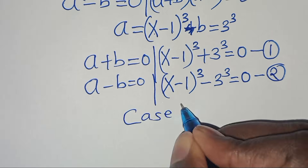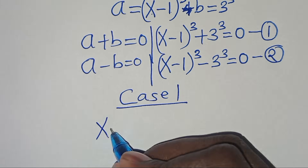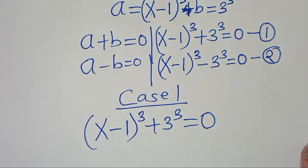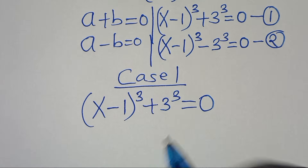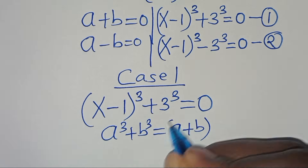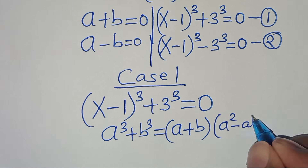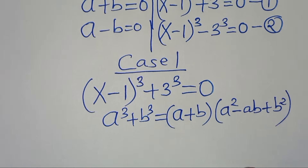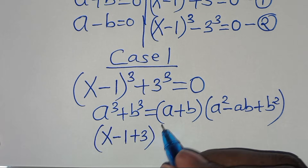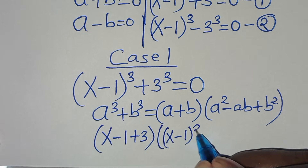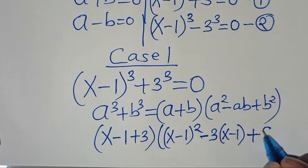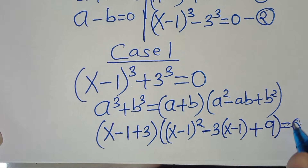Let's start with Case 1. We have (x minus 1)^3 plus 3^3 equals 0. This is of the form a^3 plus b^3, which we can express as (a plus b)(a squared minus ab plus b squared). So we have (x minus 1 plus 3) times [(x minus 1)^2 minus 3(x minus 1) plus 9] equals 0.